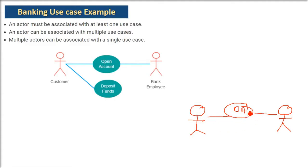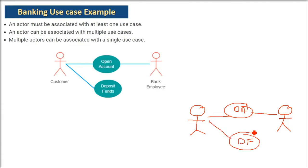Now you want to deposit funds. You don't require a bank employee because all these things are automated — we are in the present scenario. So you will deposit the fund without needing a bank employee, and we link the customer with the 'deposit funds' use case. Now every actor — either a customer or a bank employee — is associated with at least one use case, fulfilling the first condition. The second condition is also met: the customer is linked with both 'open account' and 'deposit funds.'